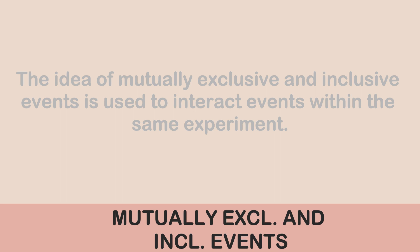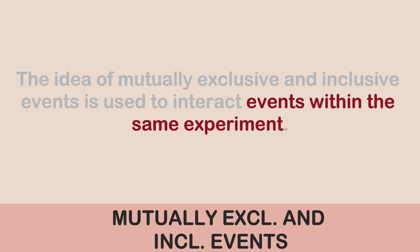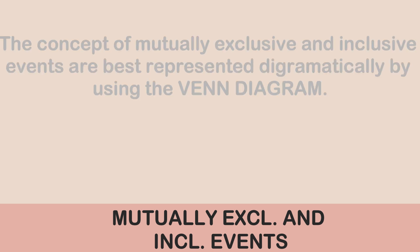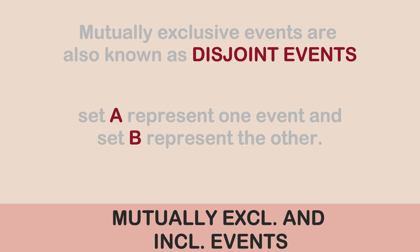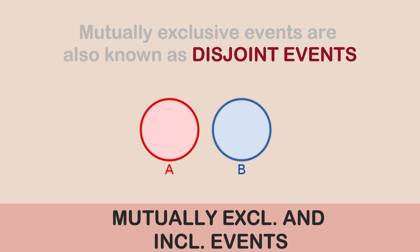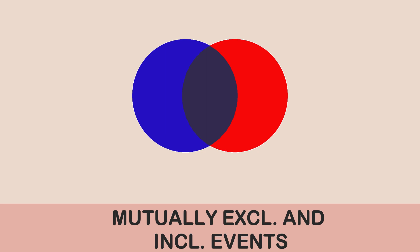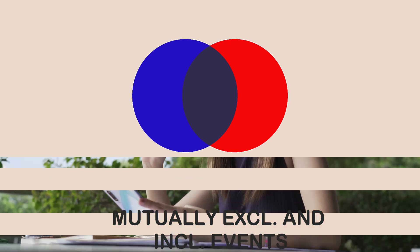The concept of mutually inclusive and mutually exclusive events involves interacting two events within the same experiment. These concepts are best expressed using Venn diagrams and set theory. Mutually exclusive events are also known as disjoint events — represented by sets A and B with no common region between them. For mutually inclusive events, there is an intersection between both sets, indicating that both events can occur simultaneously.